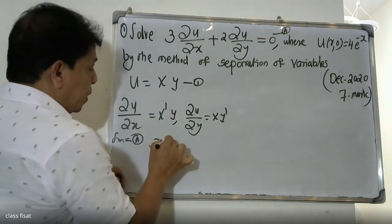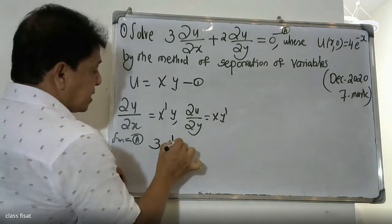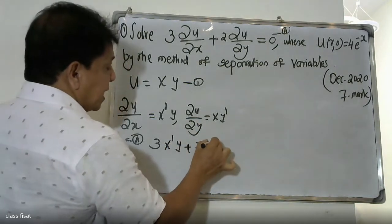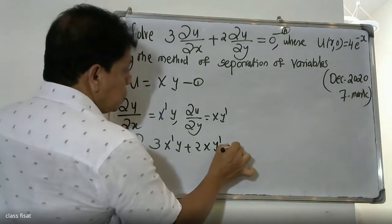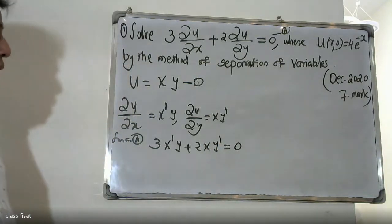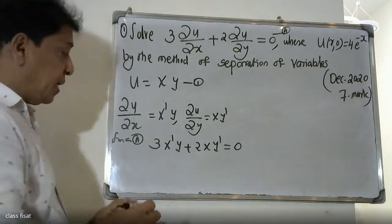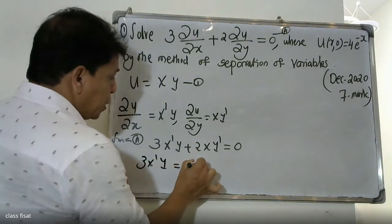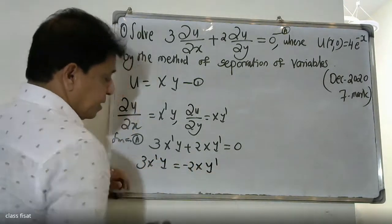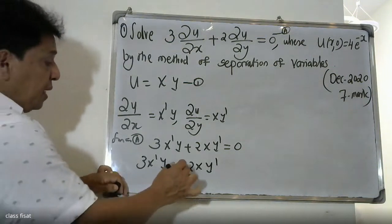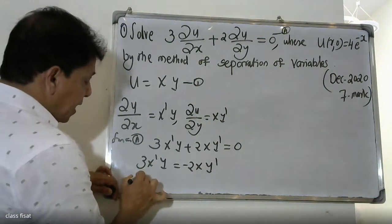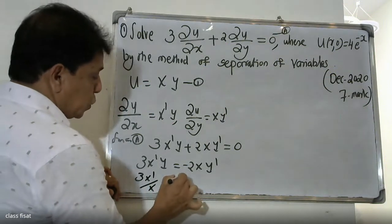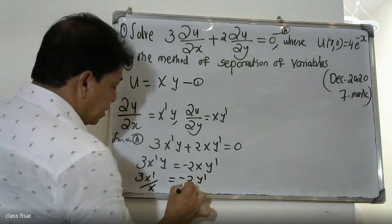Substituting into the equation: 3·X'·Y + 2·X·Y' = 0. Rearranging gives 3·X'·Y = −2·X·Y'. Dividing both sides: 3·X'/X = −2·Y'/Y.